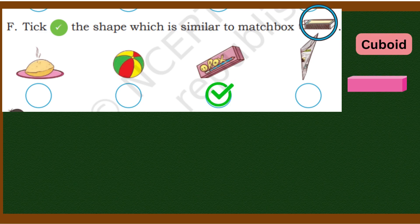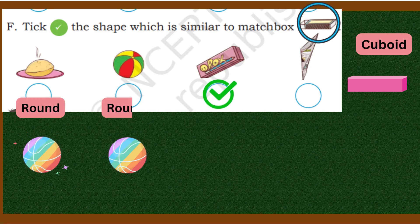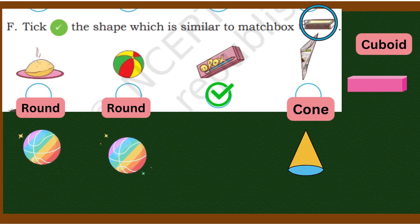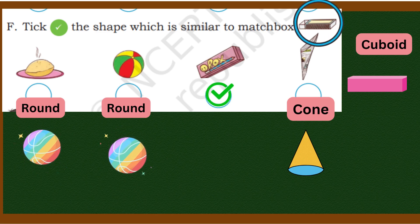We have to tick such a shape which looks like matchbox. Simple. Here our pencil box is exactly cuboid shape. It has length, breadth, and height, just like matchbox. Other shapes: roti is round, ball is also round, and paper cone is conical. In this way we have completed this exercise.